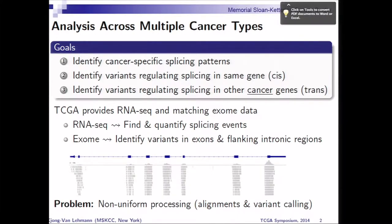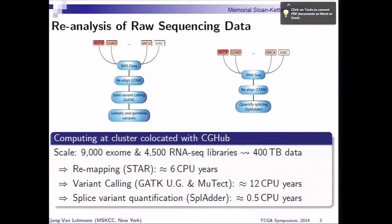However, there's one problem: unfortunately, the TCGA data has not been uniformly processed. So we set out — and this was quite a major effort — to go back and re-analyze all of the raw sequencing data. We took all the exome data and the RNA-seq data, designed our own pipeline to remap everything, and did a joint variant calling using the unified genotyper, but also tried to find somatic variants using MuTect. We then did splicing quantification using Splatter, a tool developed in the Reg Lab to find alternative splicing events and add towards the annotations of already known existing splice events.